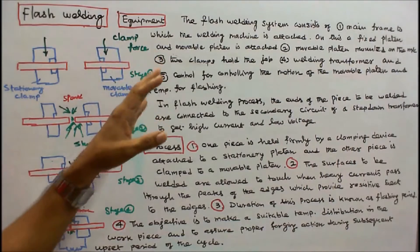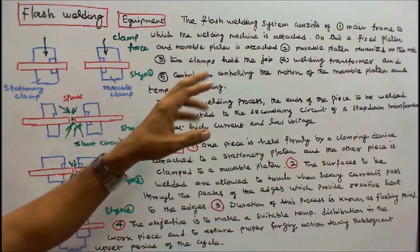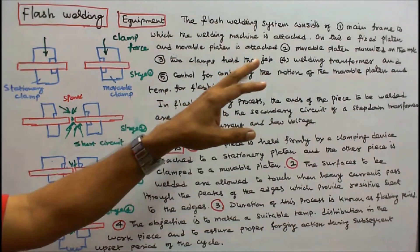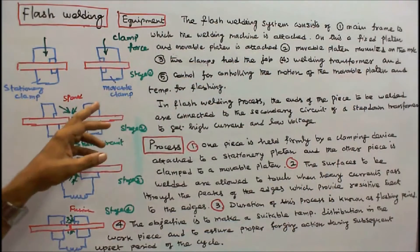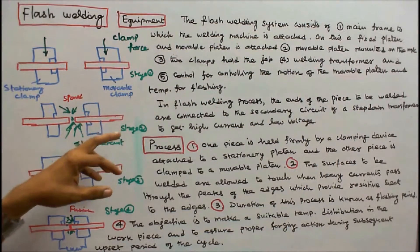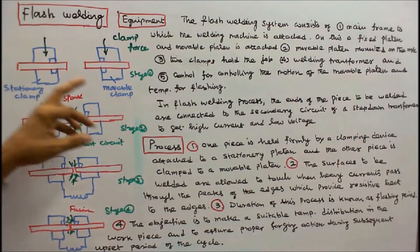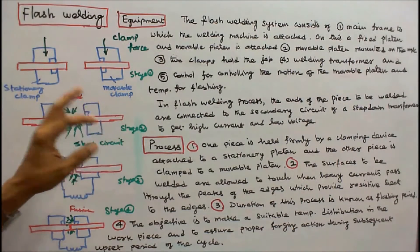Flash welding equipment: The flash welding system consists of 1. Main frame to which welding machine is attached. On this, a fixed platen and movable platen is attached. 2. Moveable platen mounted on the machine.